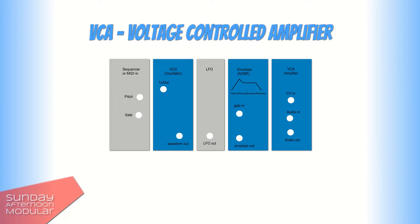VCA stands for voltage controlled amplifier. This means that it uses a voltage signal to control the amplitude or volume of a signal. The most common way is to control the signal with an envelope generator.